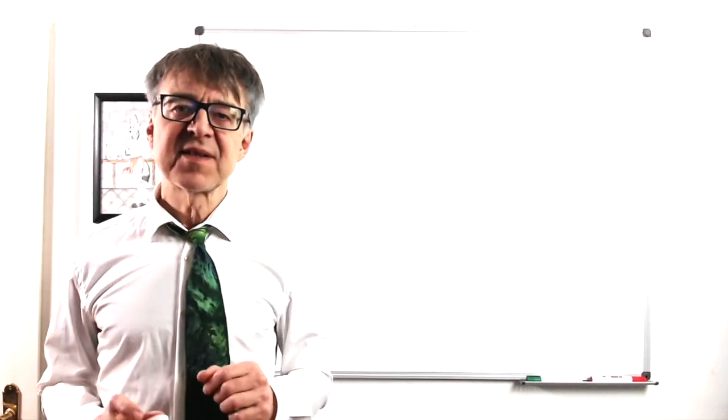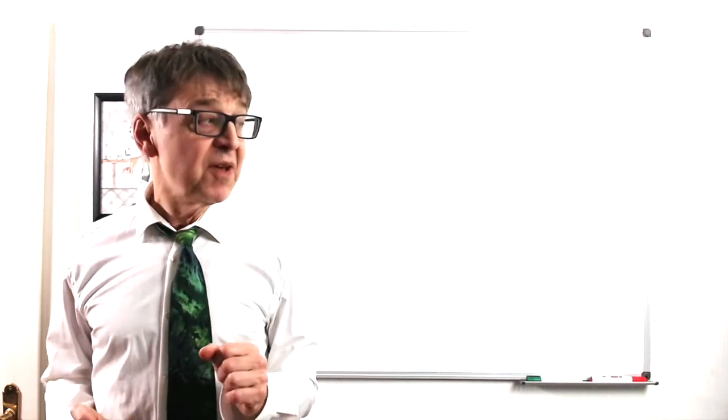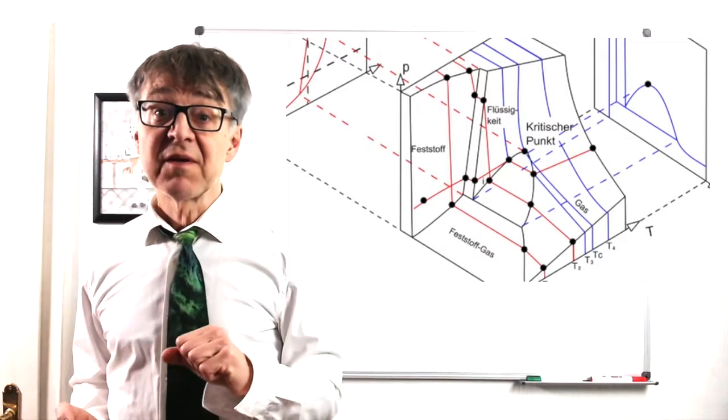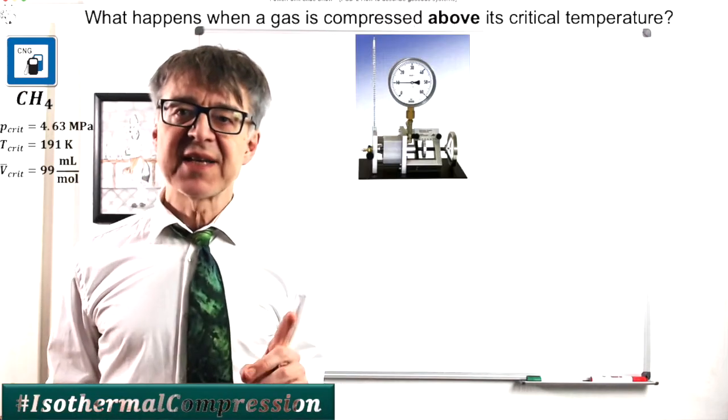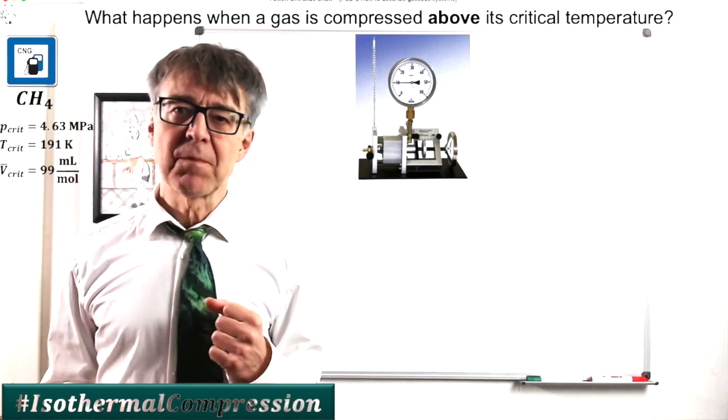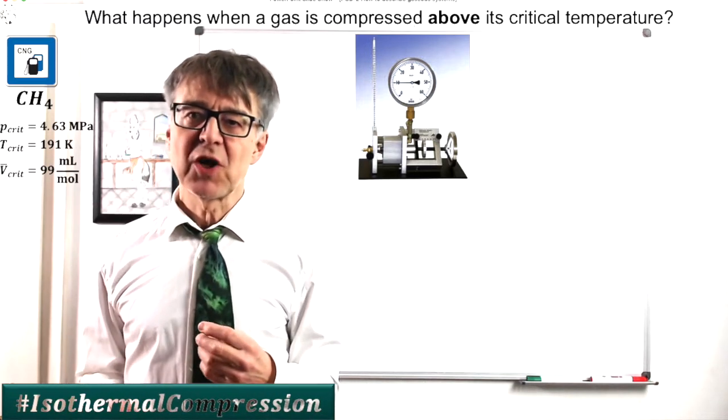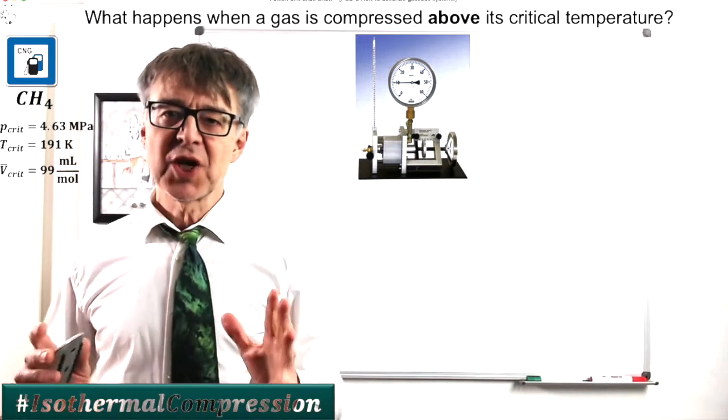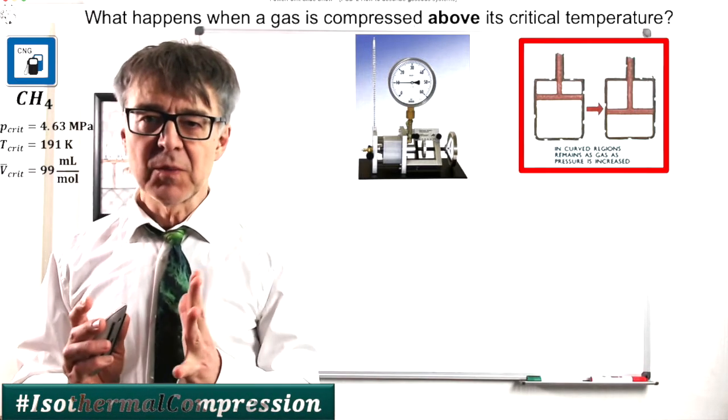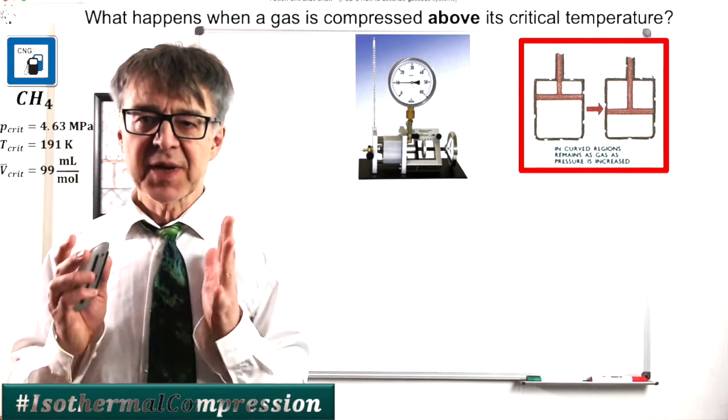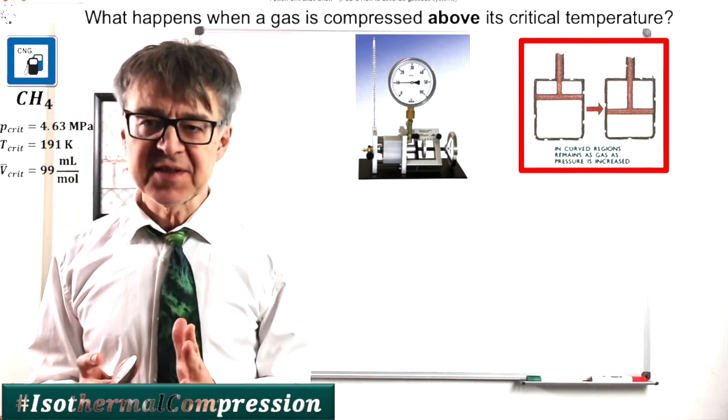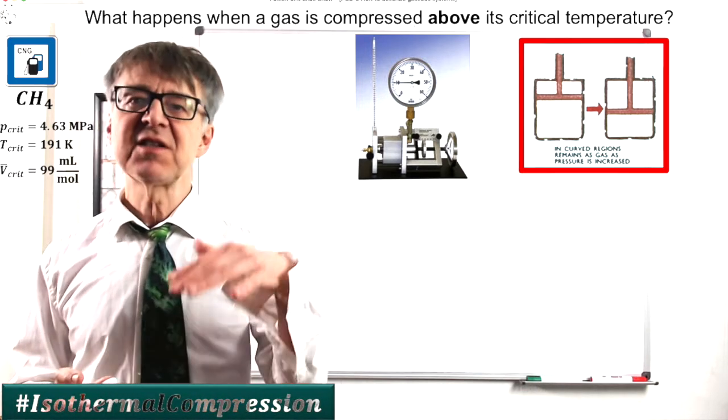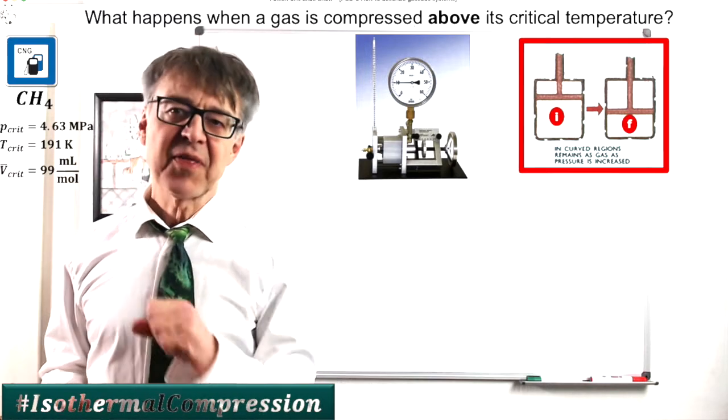Let's discuss some experiments with the PVT surface, the phase diagram. First, let's compress a gas above its critical temperature. Methane has a critical temperature far below room temperature, so let's put it in a cylinder at room temperature and reduce the volume. The gas will become continuously denser, the pressure will continuously increase, but nothing else will happen.